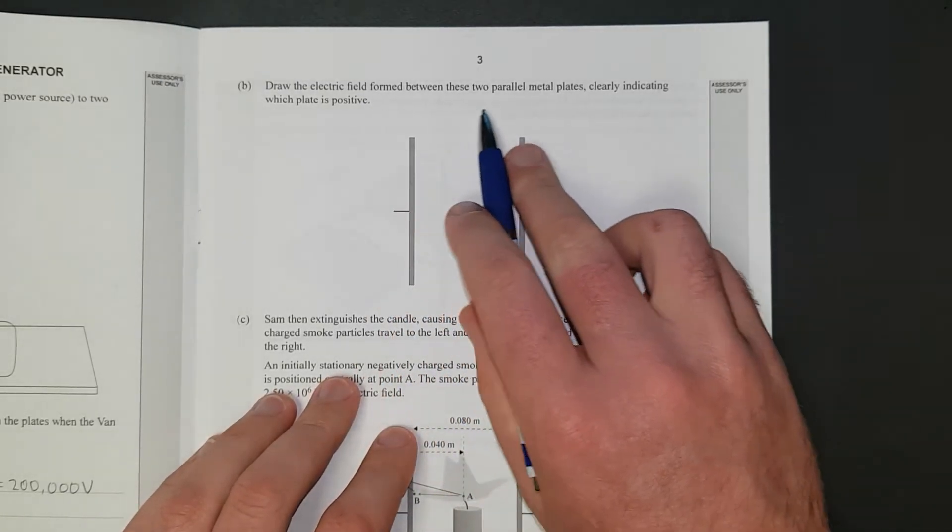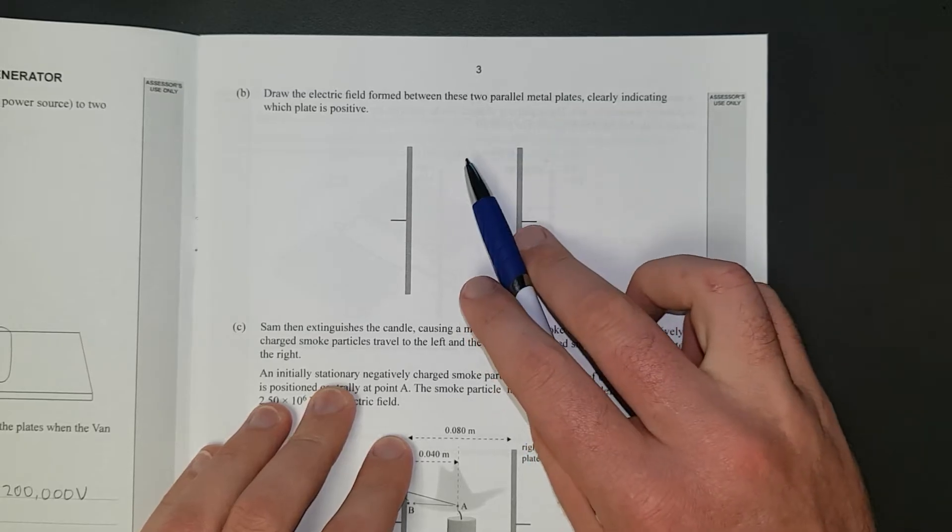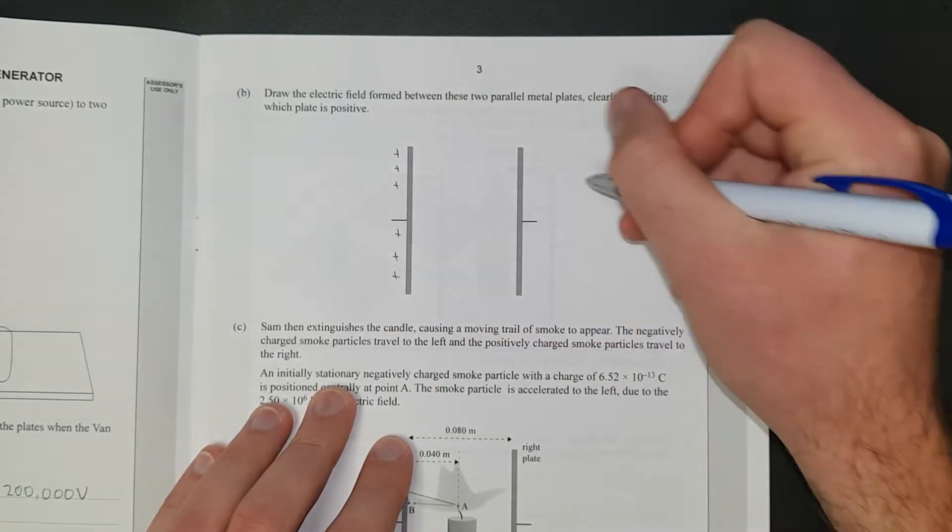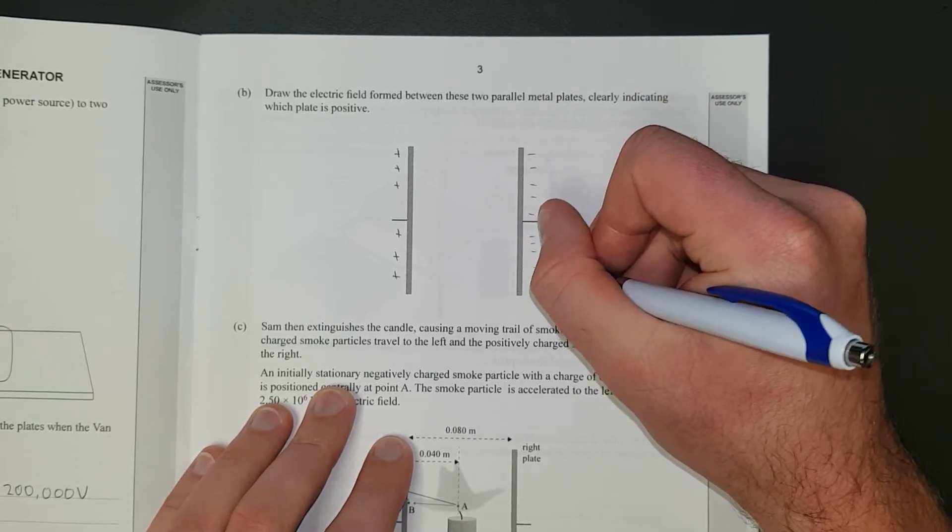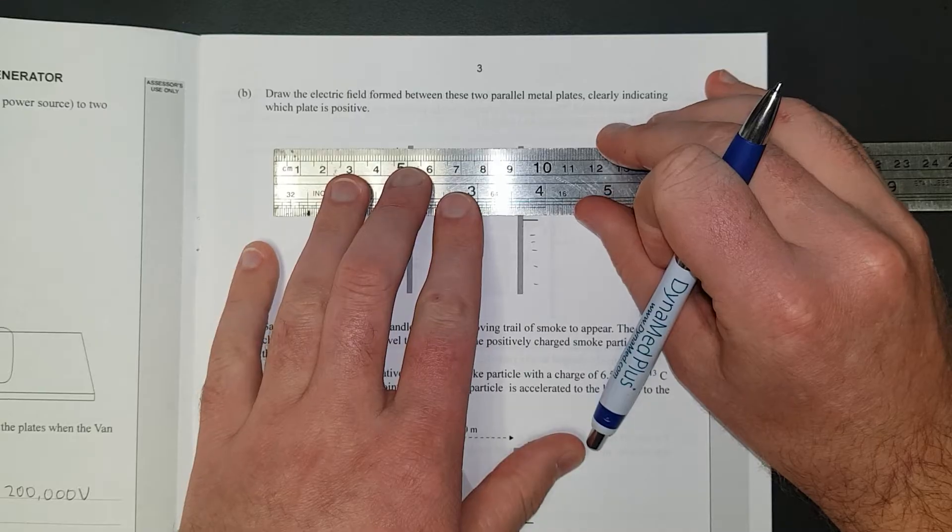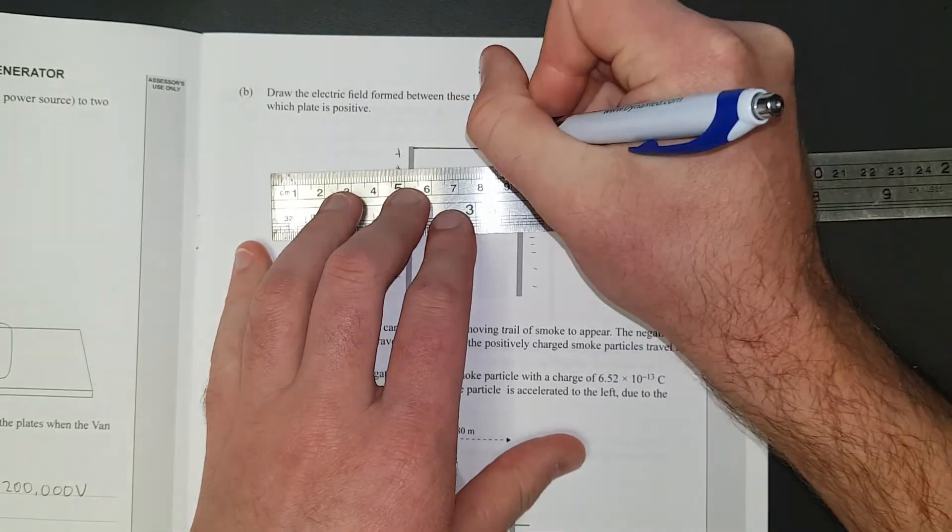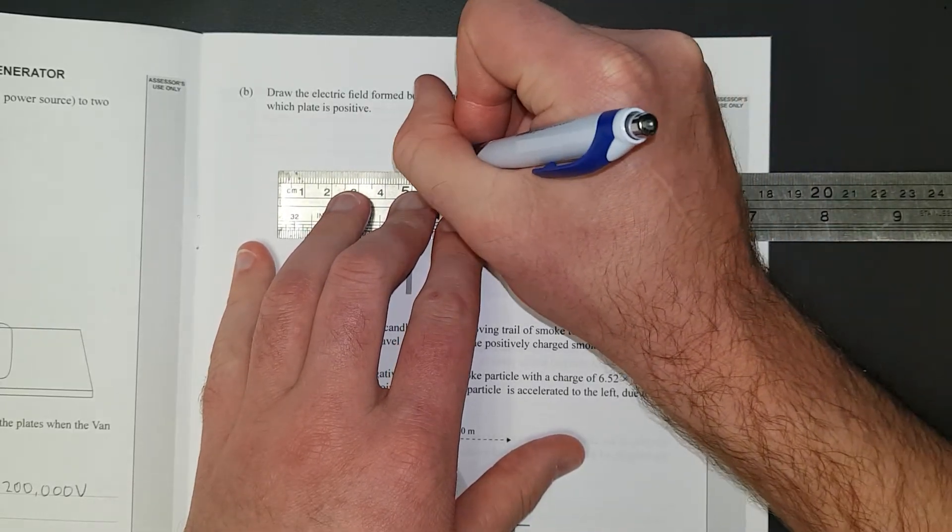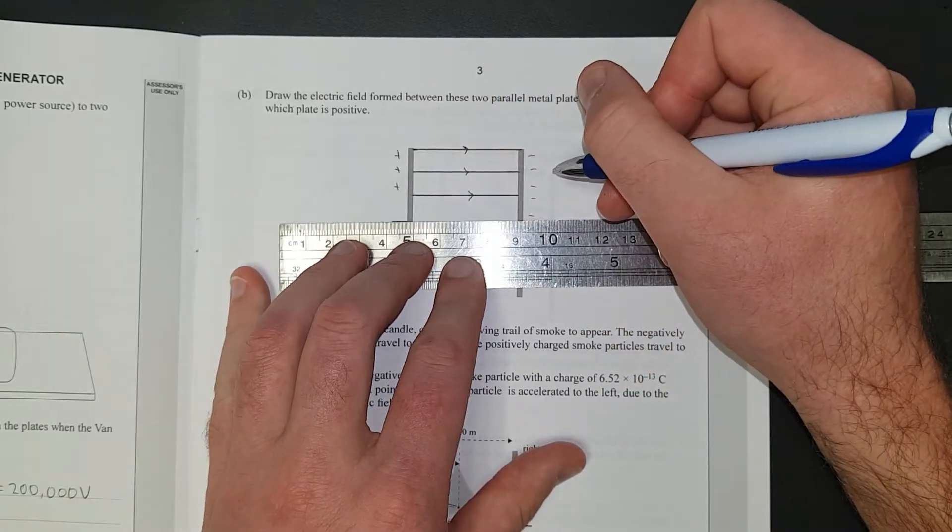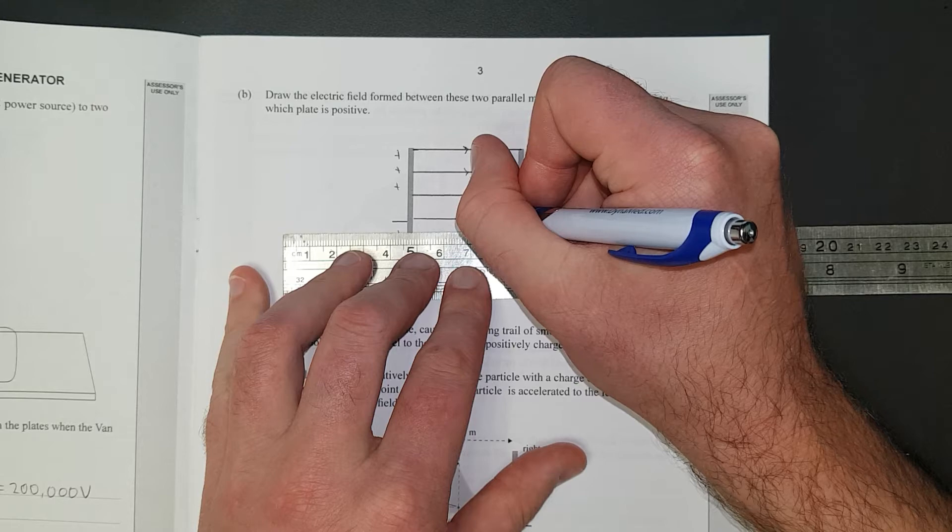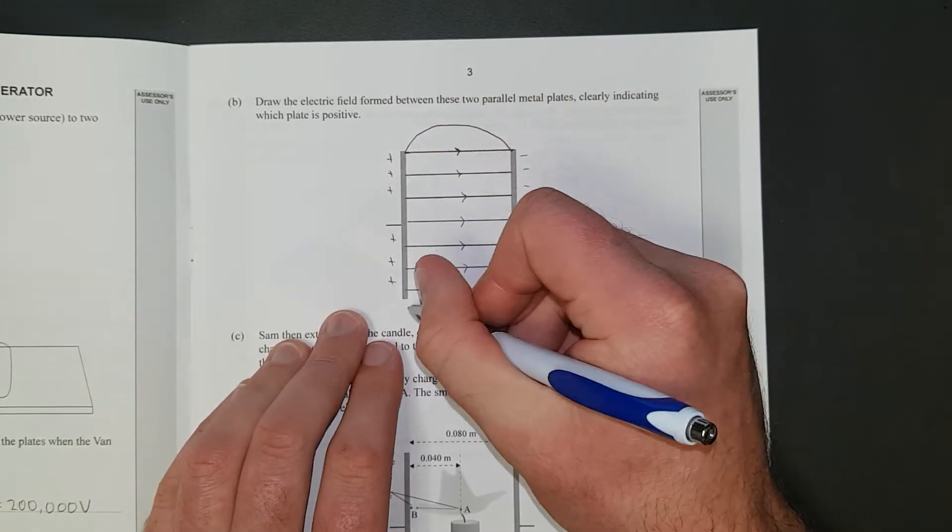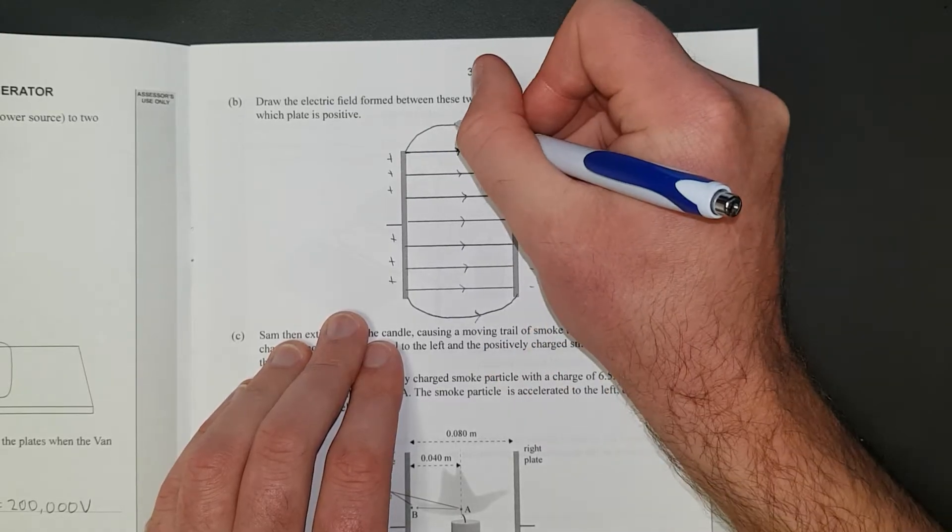Right, so, draw the electric field formed between these two plates, clearly indicating which plate is positive. So, we've already sort of established on the other side of the page that the left-hand side was positive. So, we're just going to chuck a whole lot of positives down here, and a whole lot of negatives down here. And then, okay, that's enough. We are going to get our ruler, and we're going to draw our field lines that go positive to negative. And, I'll keep them fairly spaced out, so we don't have to draw too many of them.